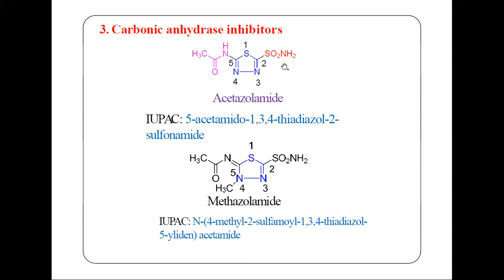If we call this a sulfonamide derivative, why is the numbering 2 for sulfonamide? Because we have the sulfate group and the amino group — we give preference to the numbering that gives the smallest locants. So sulfonamide gets position 2.